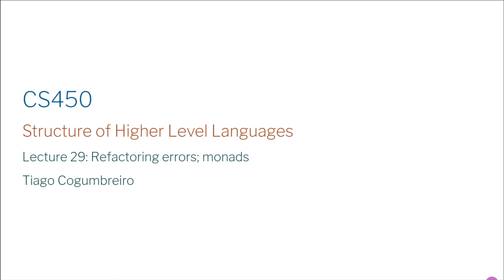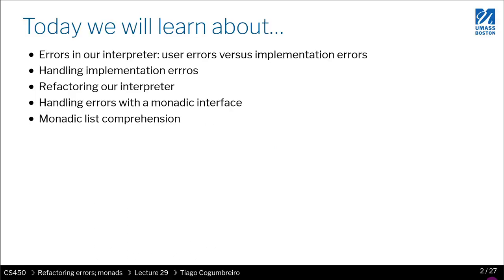One thing we haven't thought about so far is what if the user gives us some invalid input — how should we handle that? In today's lesson we're going to look at how to handle errors in the implementation, and doing so in a generalized way, refactoring to come up with a library to handle errors.